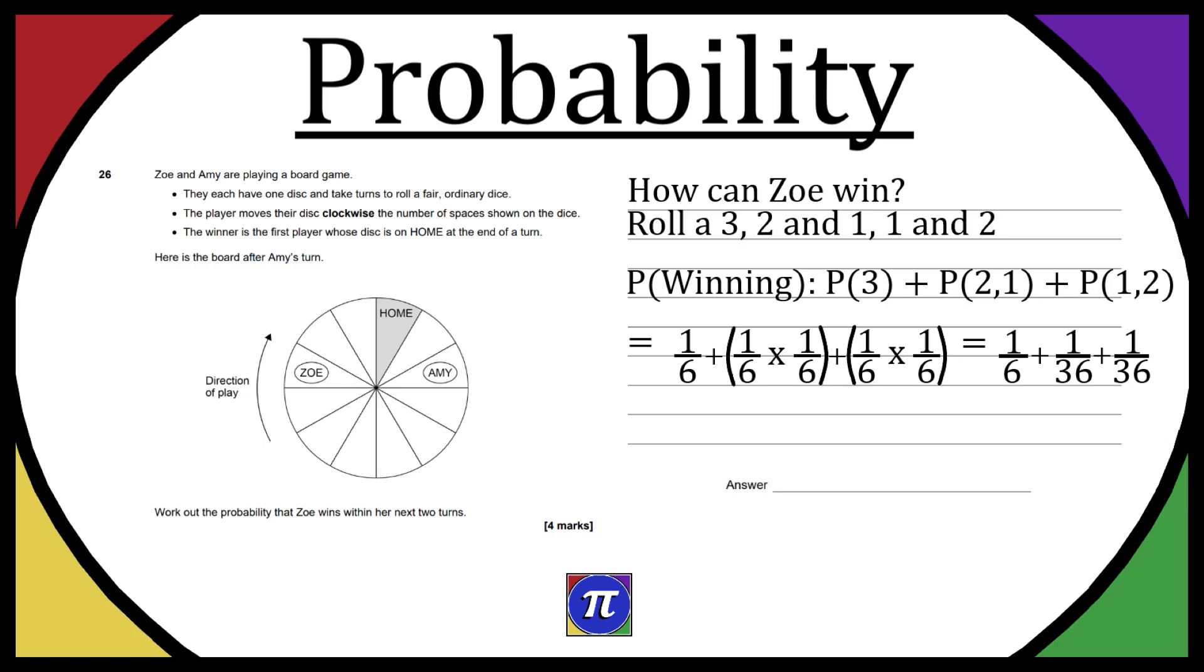When we multiply these out, we're going to get that equal to 1 over 6 plus 1 over 36 plus 1 over 36. When we convert the 1 over 6 to 6 over 36, that's going to give us 6 over 36 plus 1 over 36 plus 1 over 36. When we add them all together, that gives us 8 over 36.